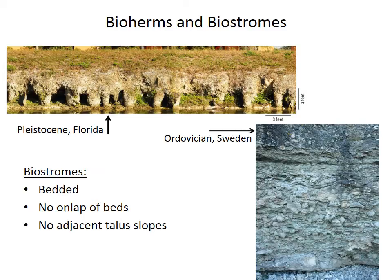The other reef type are things called biostromes. A biostrome is bedded in that it is primarily a layer; biostromes do not have relief above the seafloor, so you don't see onlapping beds,